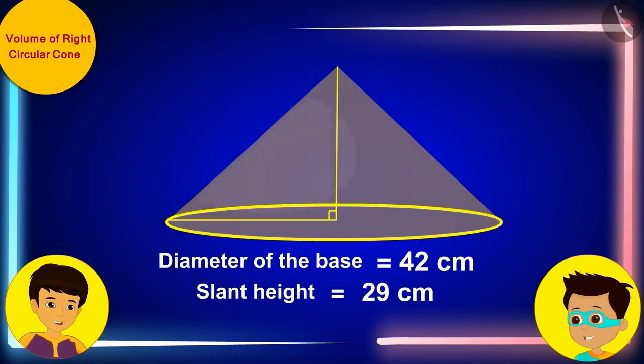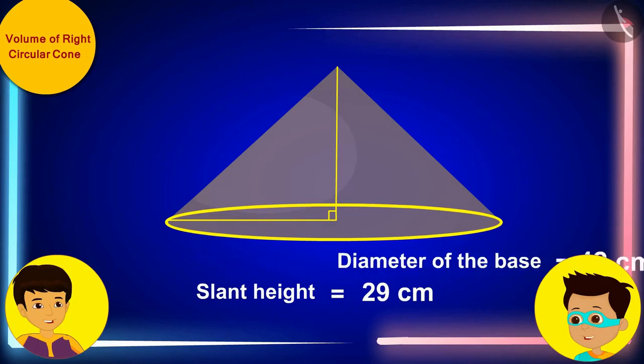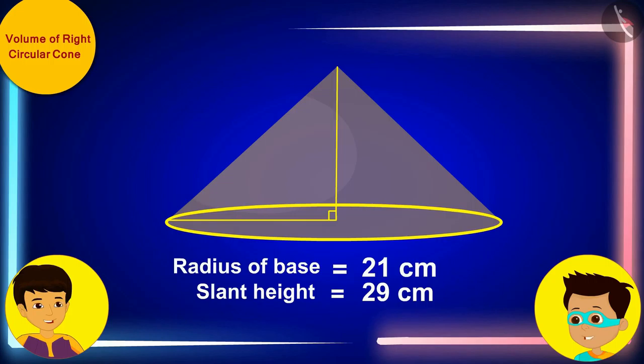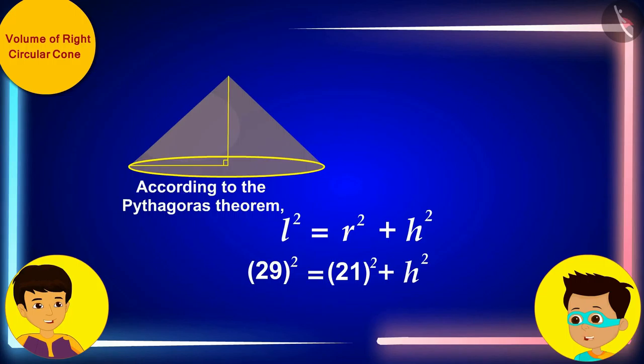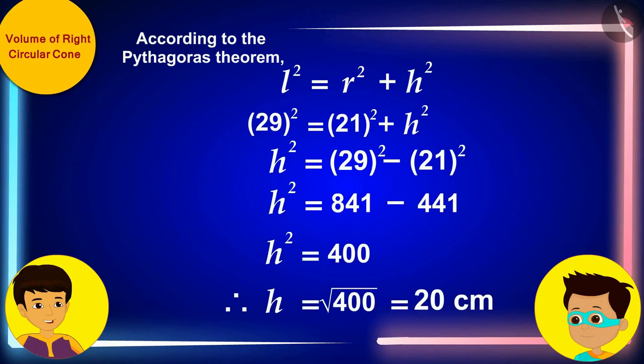Because the diameter of the base of the conical sand pile is 42 cm, the radius of its base will be half of 42 cm, i.e. 21 cm. Let us now replace L as the slant height and r as the radius respectively. The slant height of the sand pile is 29 cm. And the radius of its base is 21 cm. Look, Manas, we should solve it in this way and find the height of the conical sand pile.